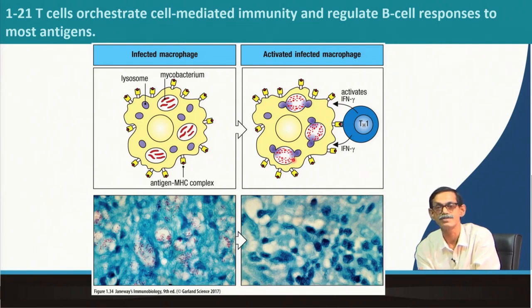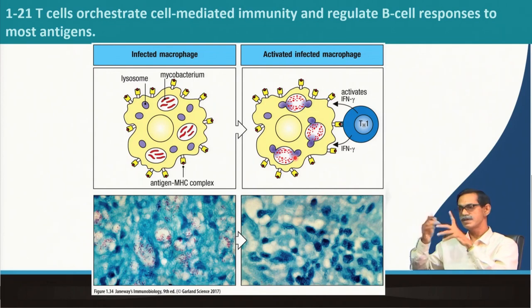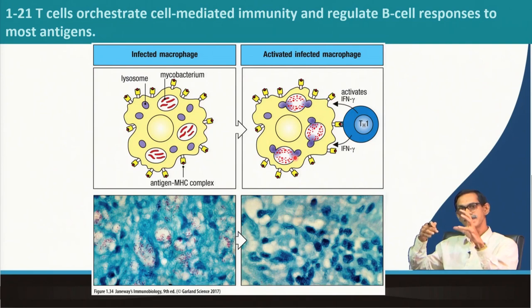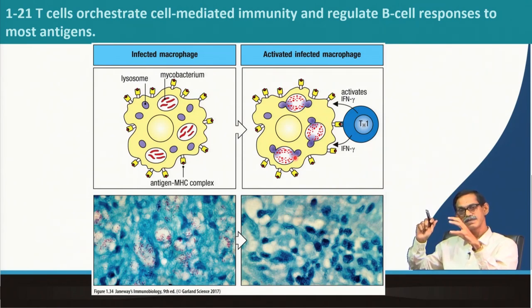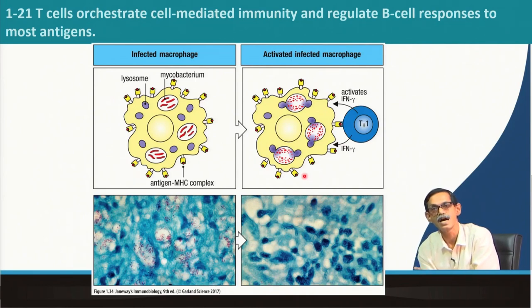This is called the TH1 response. Normally we are all exposed to mycobacterium — it is airborne — but if our immune system is strong, as soon as the bacteria start growing TH1 cells recognize them and instruct the macrophage to kill them, so we do not see any infection.